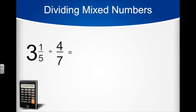Now let's see how we should handle dividing with a mixed number. 3 and 1 5th divided by 4 7ths.